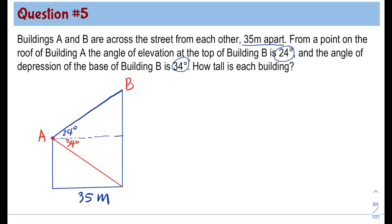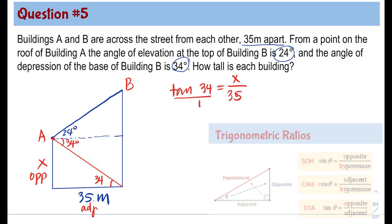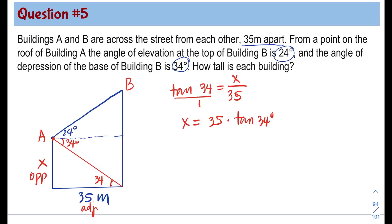Let's begin with defining the height of building A and label it X. Since the angle of depression is 34 degrees, the alternate interior angle here is also 34 degrees. In reference to the 34 degree angle, 35 is the adjacent and X is the opposite, so we use tangent: tangent 34 degrees is equal to opposite X divided by adjacent 35. Cross multiplying, X is equal to 35 times tangent 34 degrees. Using our calculator, X is approximately 23.61 meters. So the height of building A is 23.61 meters.